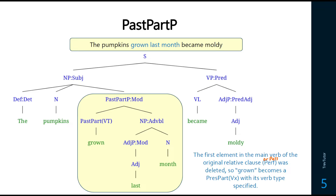Here's an example of a past participle phrase: 'The pumpkins grown last month became moldy.' This was formed from 'the pumpkins that were grown last month became moldy.' In this case we have a passive, and 'grown last month by someone' — so this is a transitive verb. After deletion of the passive and 'that,' we just get 'grown last month.' We call this a past participle because it has the past participle marker — 'grown' rather than 'grew.' It's acting as a transitive verb modifier, and we see the NP adverbial 'last month.'